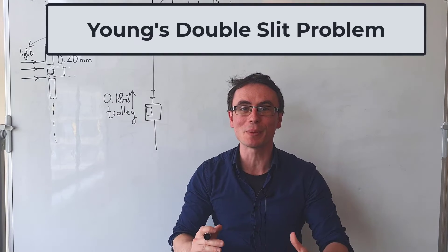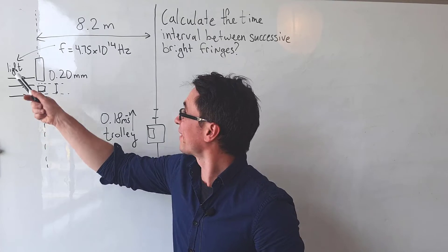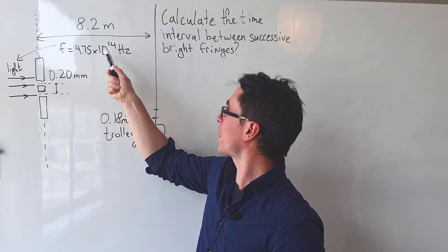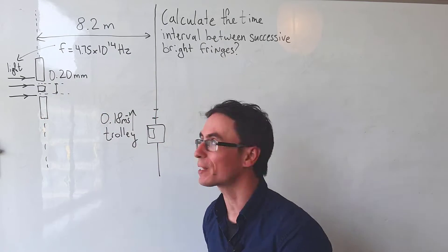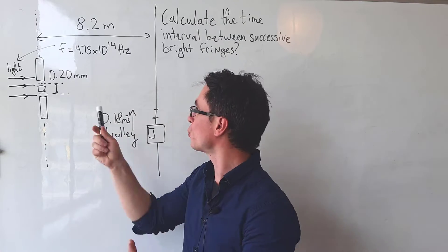Have a look at this really cool Young double slit interference question. We have light of frequency 4.75 times 10 to the power 14 hertz incident on this double slit with a slit separation of 0.20 millimeters.